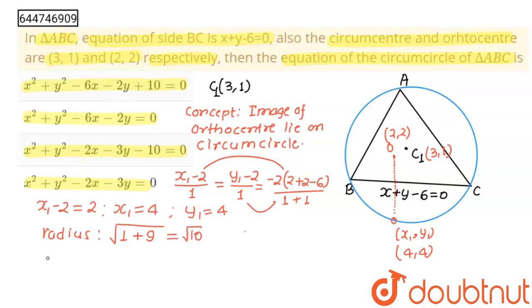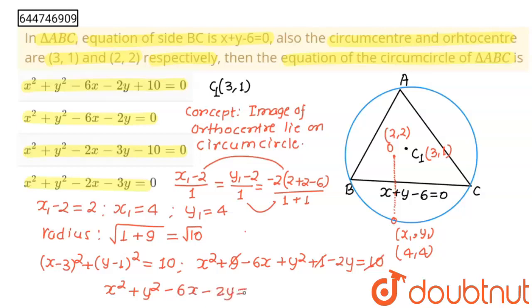Now equation of circle will be (x-3)²+(y-1)² equals radius² which is 10. And from here we will square this: x²+9-6x+y²+1-2y. So we will get x²+y²-6x-2y equals 0.